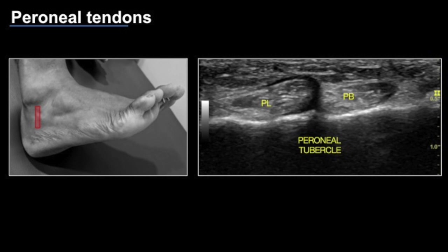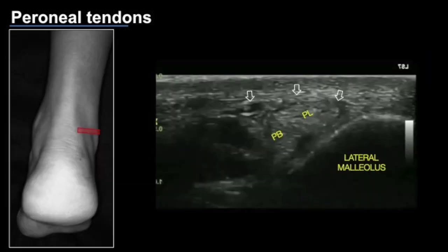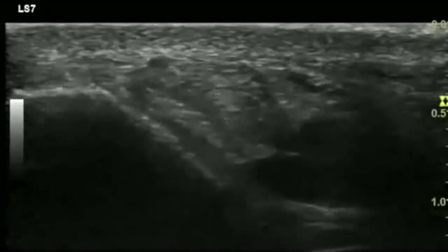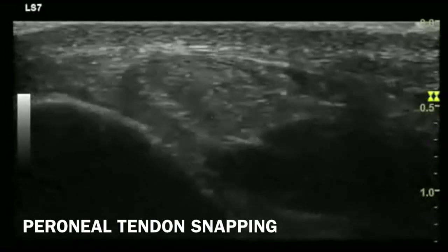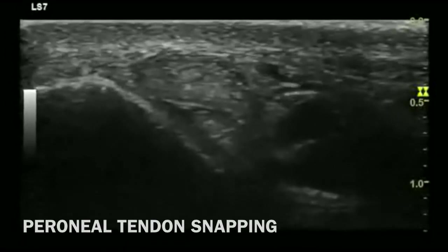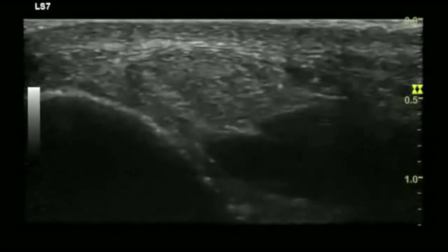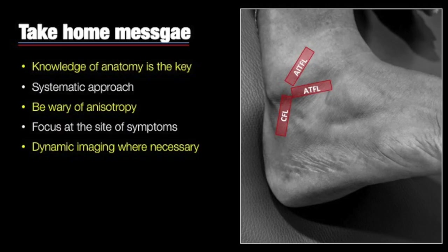Peroneal tendons also need to be evaluated with dynamic scanning, asking the patient to evert the foot. In this case, we see the peroneal retinaculum and note some intrasheath subluxation of the peroneus brevis below the peroneus longus tendon.